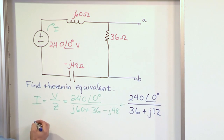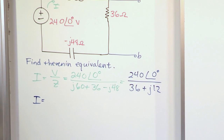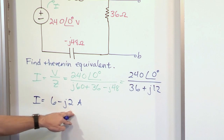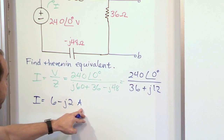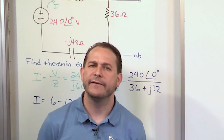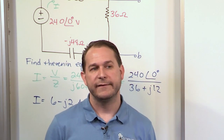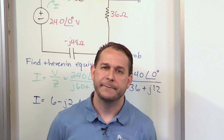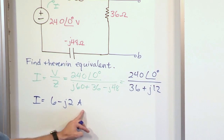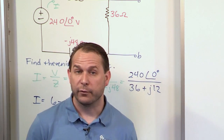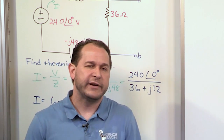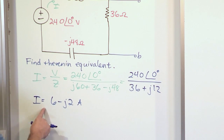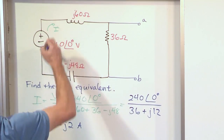When you do the division, the current I circulating around there is 6 minus j2 amps. I wrote it in rectangular notation, but I could have written it as a polar number. As we work through problems I'll sometimes write currents as polar — magnitude and phase — and sometimes in rectangular form as real plus imaginary. They're both phasors and I can convert between them. You just need to get used to seeing it both ways. Once you understand your calculator you can switch between notations freely.